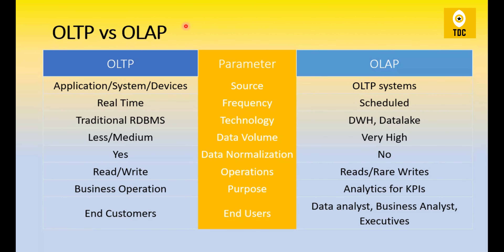Now let's look at the differences in a few parameters. First, the source — in case of OLTP, data comes from different applications: online shopping carts, banking applications, servers generating logs, or IoT/sensor devices continuously producing data. For OLAP, the data comes from multiple OLTP systems — there might be hundreds of OLTPs and all their data gets captured in OLAP for analysis.